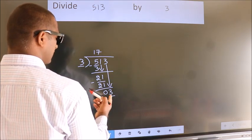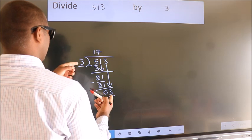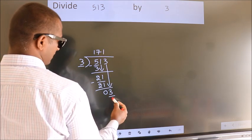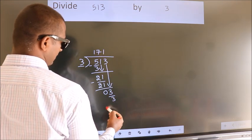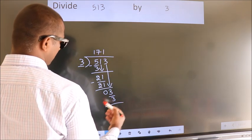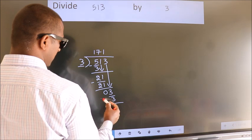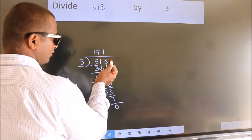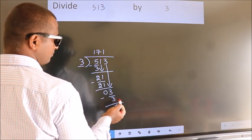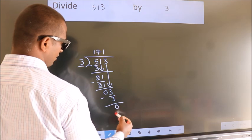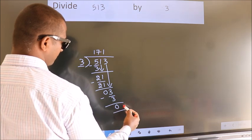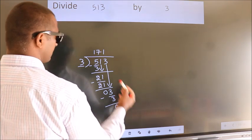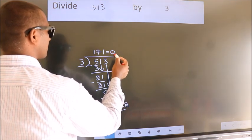When do we get 3 in the 3 times table? 3 ones are 3. Now we subtract. We get 0. No more numbers to bring down, so we stop here. This is our remainder. This is our quotient.